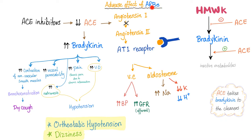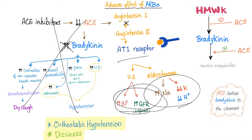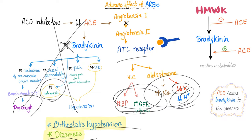Now the side effects of angiotensin receptor blockers: ARBs just block the AT1 receptor of angiotensin 2, but they do not touch the ACE enzyme. So bradykinin is not going to be high. You don't have symptoms of bradykinin. But you still have hypotension, natriuresis, hyperkalemia, metabolic acidosis, and some orthostatic hypotension and dizziness — but you don't get dry cough and you do not get angioedema.